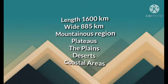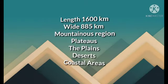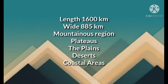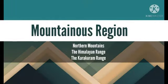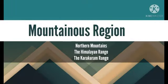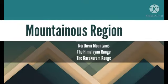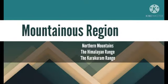On the basis of physical features, Pakistan is divided into five main features: the mountainous region, plateaus, the plains, deserts, and coastal areas. In today's lecture we are going to talk about the mountainous region, and most importantly the north mountainous region. The mountainous regions are basically divided into the north mountains and north western mountains.